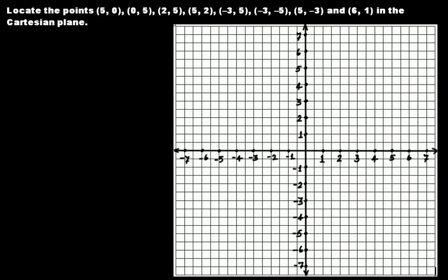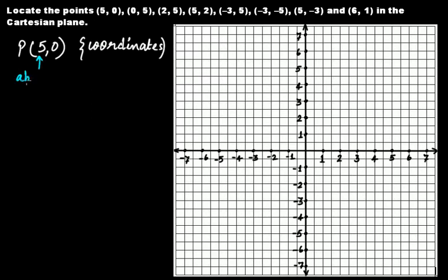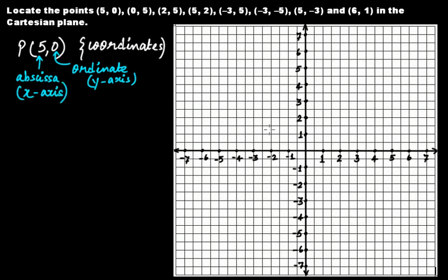The first point is (5, 0). Let's say this is our point P, so the coordinates of point P are (5, 0), where 5 tells you about the abscissa and 0 tells you about the ordinate. The ordinate is the position on the y-axis and the abscissa is the position on the x-axis. In our graph, each unit is equal to two blocks — we have taken two blocks equal to one unit.